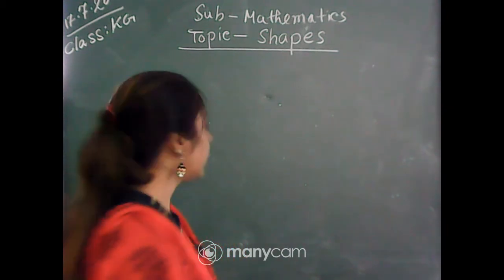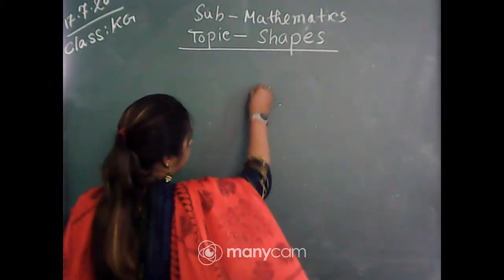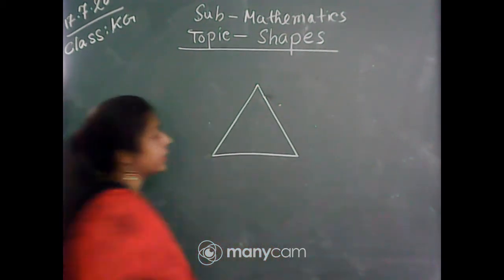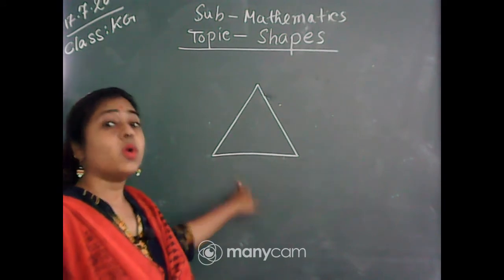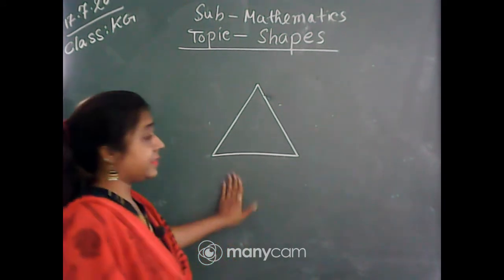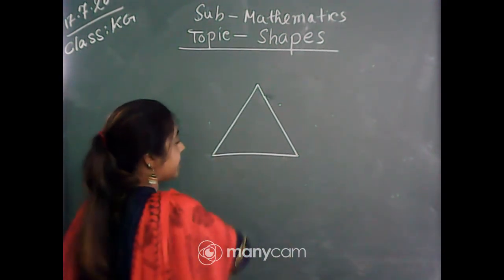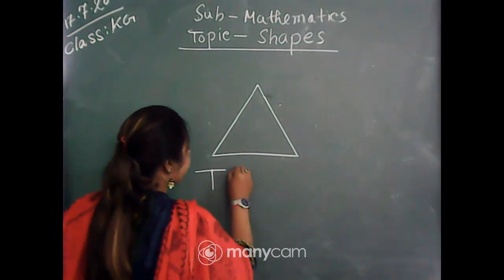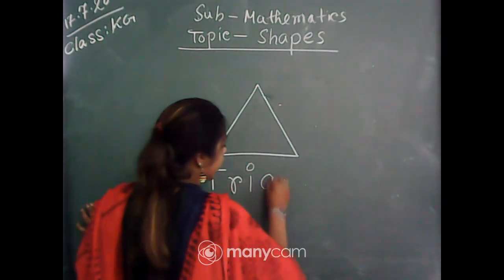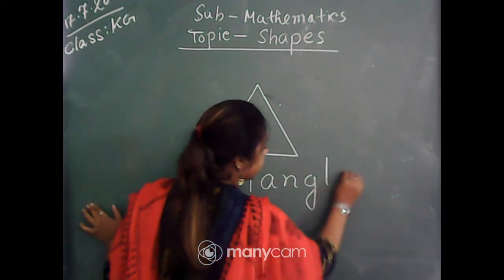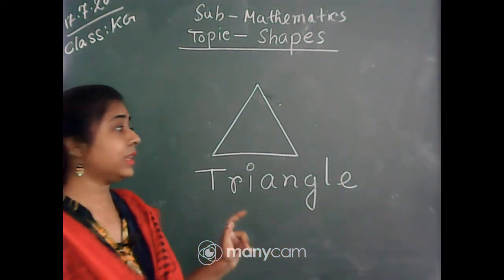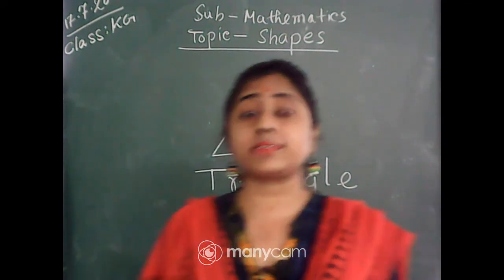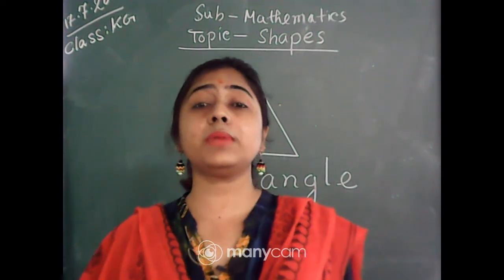So let us start. The first shape is — what shape is this? This is triangle. Triangle, triangle — this is triangle. So why is that shape called triangle? Why is its name triangle?